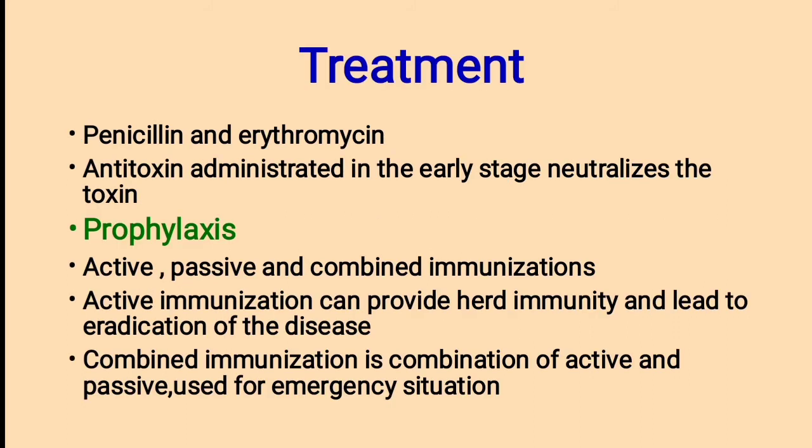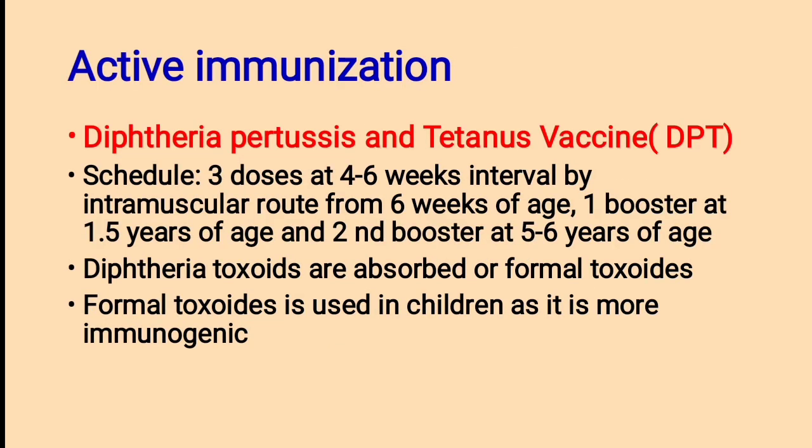Treatment: mainly two antibiotics are used — penicillin and erythromycin. Antitoxin administered in the early stage neutralizes the toxin. Prophylaxis: active, passive, and combined immunization methods are used. Active immunization can provide herd immunity and lead to eradication of the disease. In active immunization, a triple bacterial vaccine known as DPT vaccine — diphtheria, pertussis, and tetanus — is used.